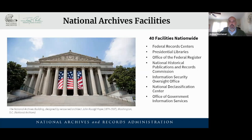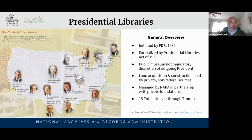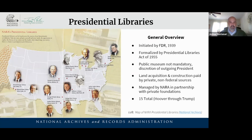We have 40 facilities nationwide altogether, not just in College Park, Maryland or Washington, D.C. We have regional facilities, presidential libraries, and many other associated places. All presidential libraries from Herbert Hoover through President Obama are affiliated with the National Archives. FDR had the first, and his predecessor decided to have one after he did. Having a public-facing museum is not mandatory for an outgoing president, but their collections and records from their time in office are managed by the National Archives — they belong to the American people.